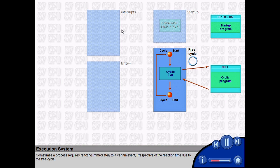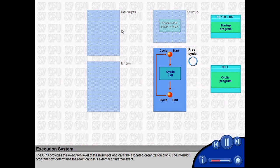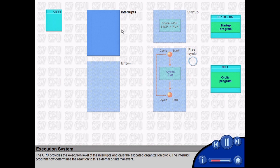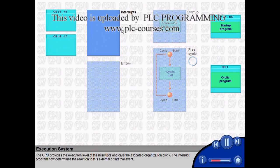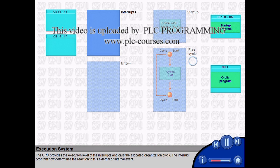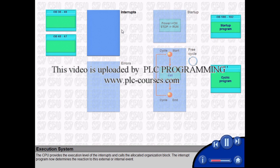Sometimes a process requires reacting immediately to a certain event, irrespective of the reaction time due to the free cycle. The CPU provides the execution level of the interrupts and calls the allocated organization block. The interrupt program now determines the reaction to this external or internal event.